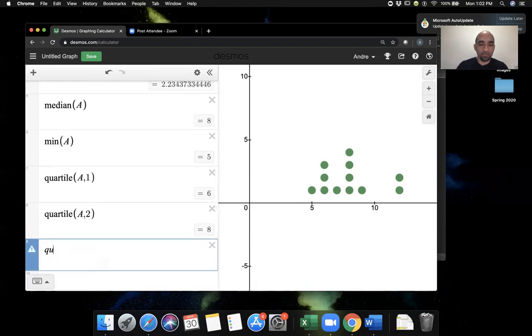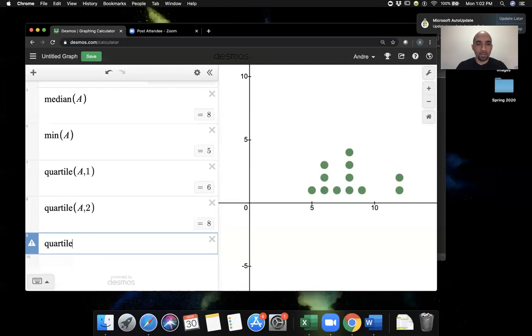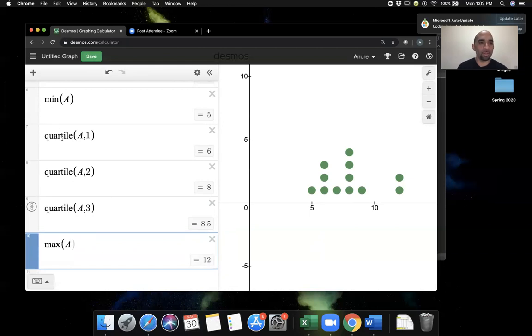To find the third quartile, I'll do Q-U-A-R-T-I-L-E A comma 3. The third quartile is 8.5. And lastly, the max—I'll do max of data set A. So you see these commands—min, quartile, quartile, quartile, max—allow us to find the five number summary.